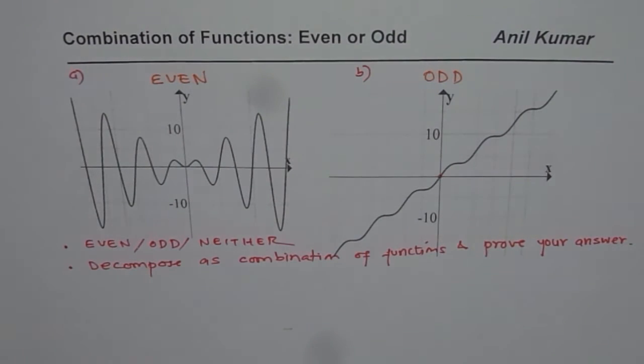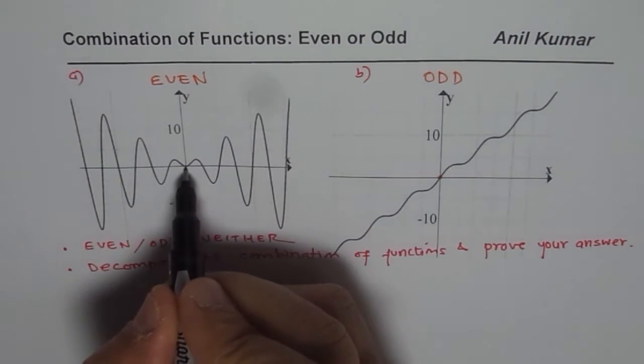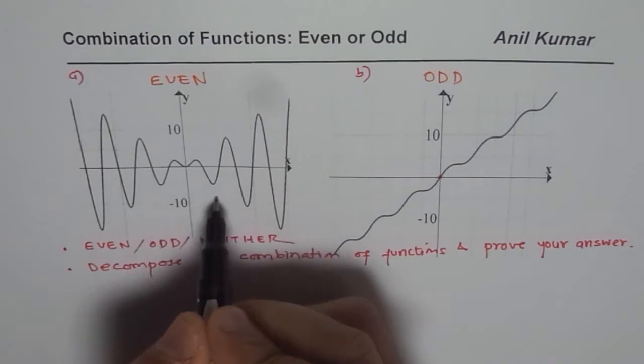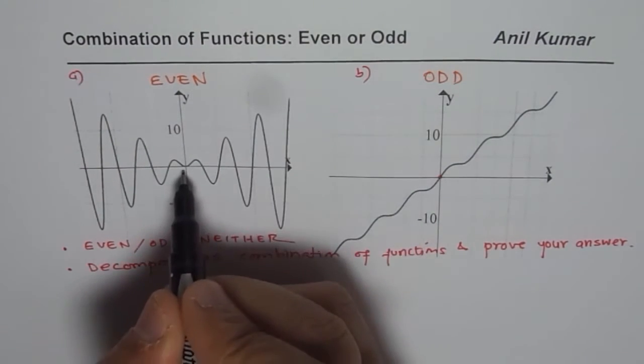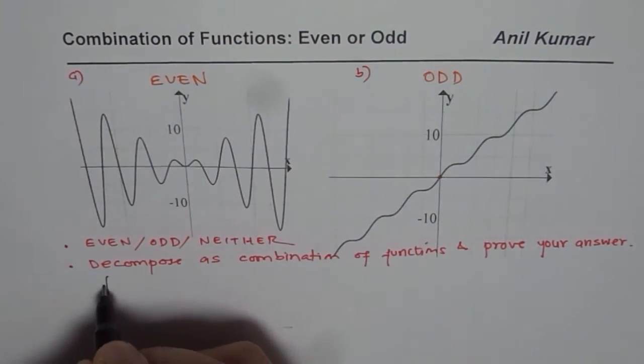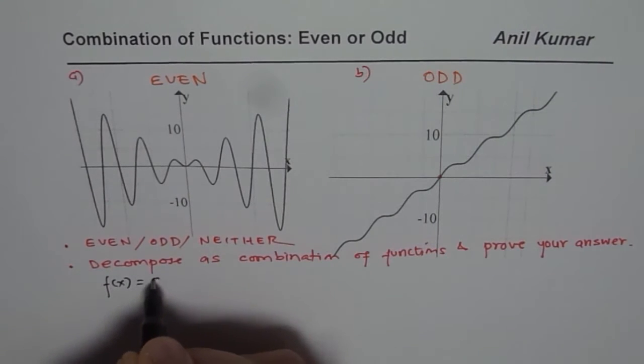Now we have to figure out how to decompose them into two different functions and what combination results into even or odd. As this function starts from the origin it looks like a sinusoidal wave starting with zero. I could say that f of x is equal to sin x.